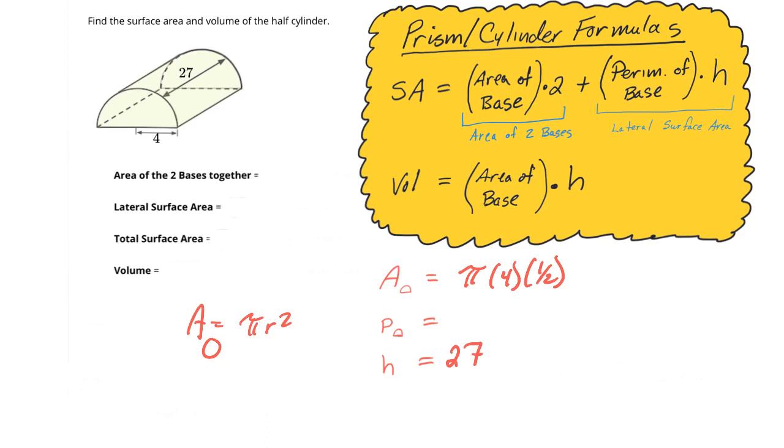Now the next thing you have to do is find the perimeter of your base. If I want to find the perimeter of this base, I'm going to start with the curved part first. That's half of the distance around the whole circle, so that's like the circumference of a circle, which is π times diameter. Now if the radius is 4, the diameter is going to be 8, so it'll be π times 8. That's the distance around the whole circle.